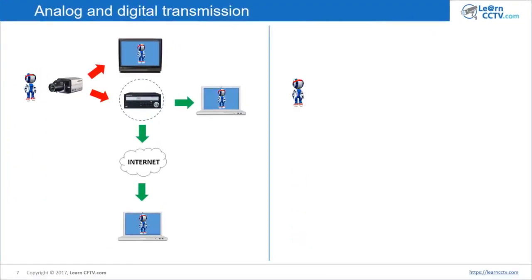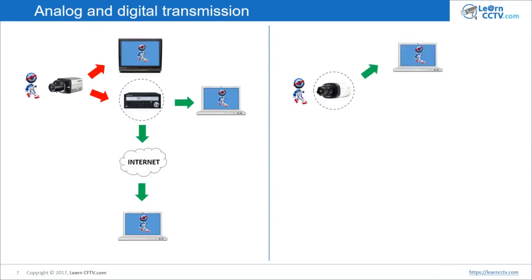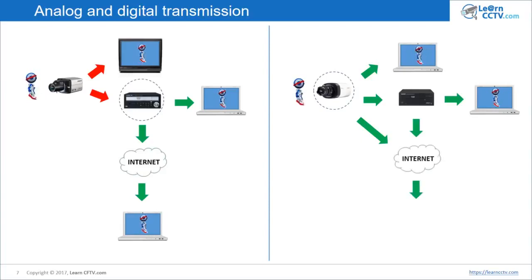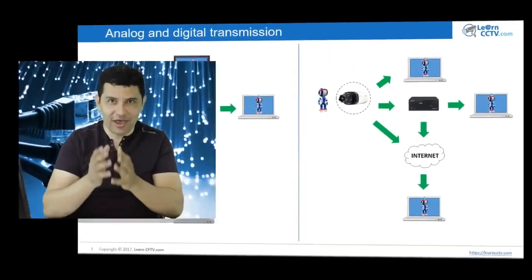Comparing now with a digital system: the camera sends directly to a computer, so you can view it right away. You can also send from the camera to an NVR — a Network Video Recorder — and then to your computer. It's the same concept with the internet: you can send directly from your camera or your NVR to the internet and then to your computer wherever you are located. With IP cameras, you go directly from the camera in digital format to wherever you want to send the video.